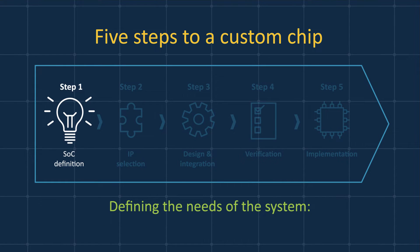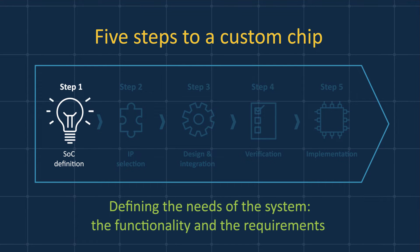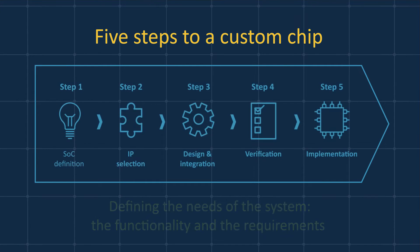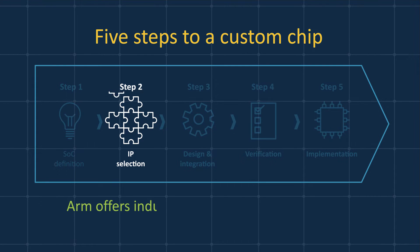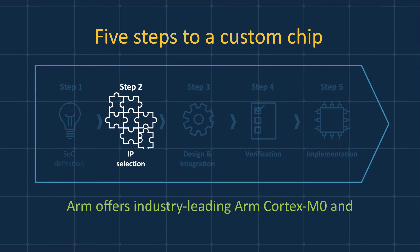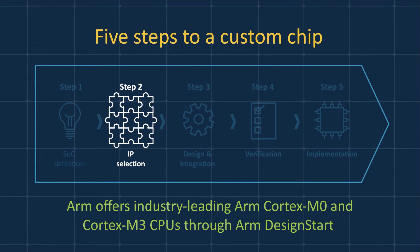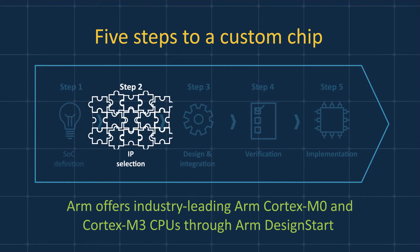The first step is defining the needs of the system, the functionality and the requirements. Then, select the IP blocks that satisfy your requirements. ARM offers industry-leading ARM Cortex M0 and Cortex M3 CPUs through ARM Design Start — quickly, easily and for no upfront fee.